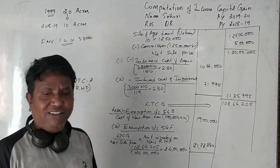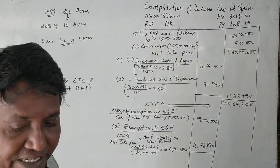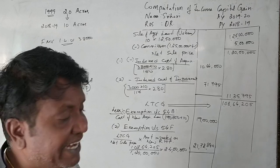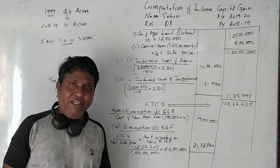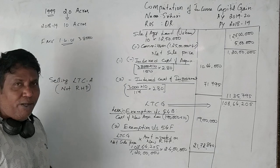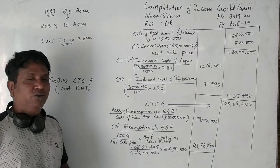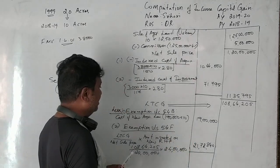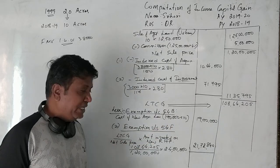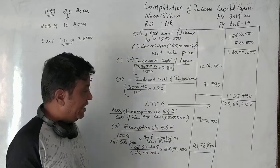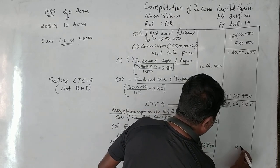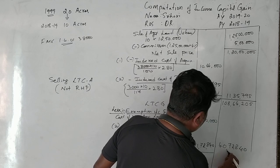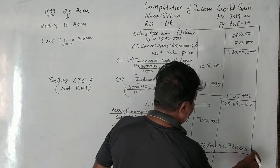The third appropriation was repayment of Rs. 9,00,000 for a bank loan taken for private purpose. This cannot be given as an exemption under any section, so we ignore this adjustment. Total exemption = Section 54B (Rs. 19,00,000) + Section 54F (Rs. 21,72,840) = Rs. 40,72,840.